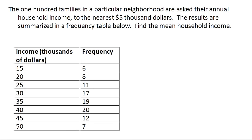100 families in a particular neighborhood are asked their annual household income to the nearest $5,000, and the results are summarized in the frequency table shown here. Let's see if we can calculate the mean household income.